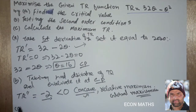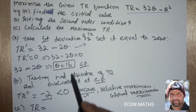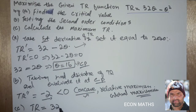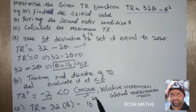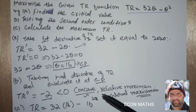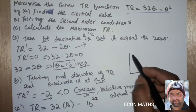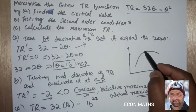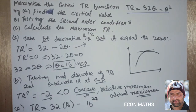The third part: calculate the maximum total revenue. We will put the value of Q equals 16 into the given total revenue function. Therefore, total revenue equals 32 times 16 minus 16 squared, which comes out to be 256. Since this function had only one critical point, that was also the global maximum.